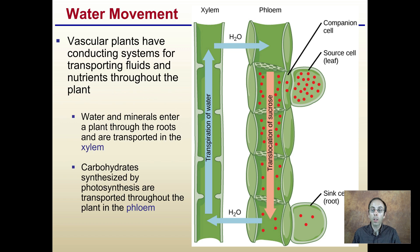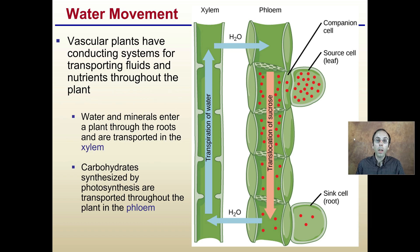When looking at the transpiration process, we have water movement in the plant. Vascular plants have conducting systems for transporting fluids and nutrients throughout the plant. Water and minerals enter through the roots and are transported in the xylem. We see the xylem pictured here on the left. Carbohydrates synthesized by photosynthesis are transported through the plant in the phloem, shown on the right here. These little red circles represent the sucrose or sugars.